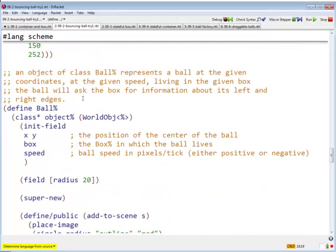Let's go look at balls. An object of class ball represents a ball at the given coordinates, at the given speed, living in the given box. The ball will ask the box for information about its left and right edges. That's how the ball will determine whether or not to bounce. You guys have all written bouncing balls at this point, bouncing rectangles, whatever.